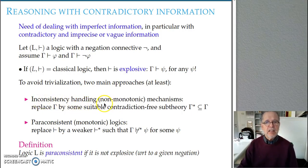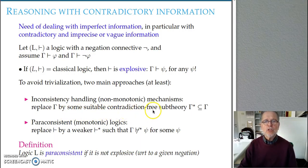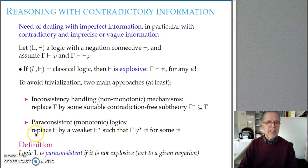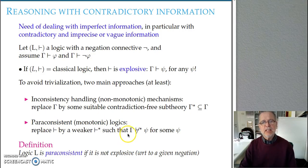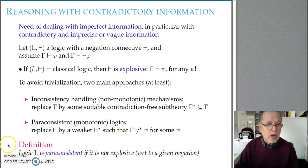The inconsistency handling approach is a non-monotonic mechanism that replaces the set of premises by some suitable contradiction-free subtheory gamma-star, and there are several methods for obtaining this. The paraconsistent monotonic logics approach goes the other way, replacing the deduction with a weaker deduction that is not explosive. In this sense, a logic is defined as paraconsistent if it is not explosive with respect to a given negation.